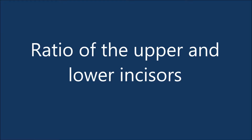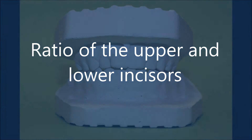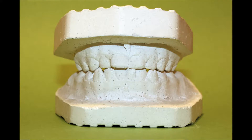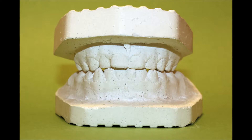Ratio of the upper and lower incisors. Tons index is the ratio between sums of mesiodistal width of 4 upper and 4 lower permanent incisors, which equals 1.35. This ratio corresponds to orthodontic occlusion with normal overjet and overbite on one-third of height of the crown. Dolga Polova stated that the same relation exists in the primary dentition. The Dolga Polova index is the ratio between sums of mesiodistal width of 4 upper and 4 lower primary incisors, which equals 1.3.